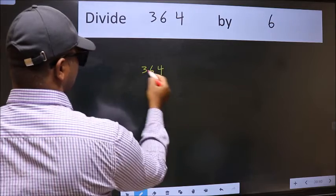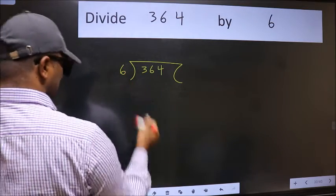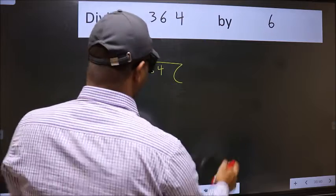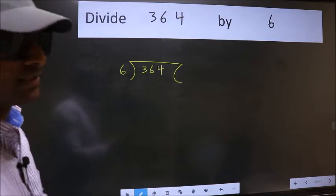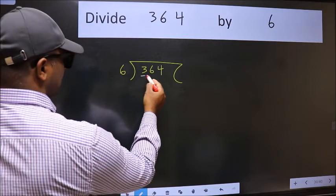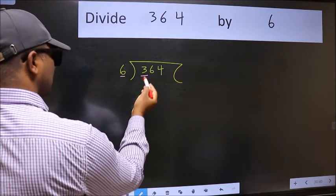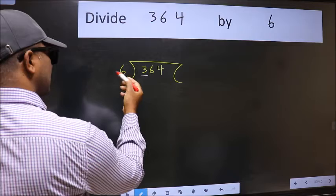364 here, 6 here. This is your step 1. Next, here we have 3 and here 6. 3 is smaller than 6.